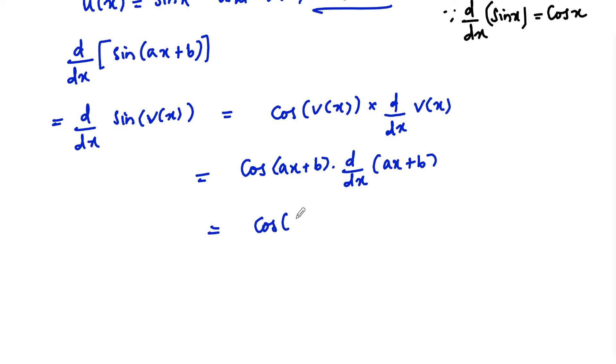So we can write cos of ax plus b. The d/dx of ax is a, and differentiation of constant term is 0. So we can write a times cos of ax plus b as the answer.